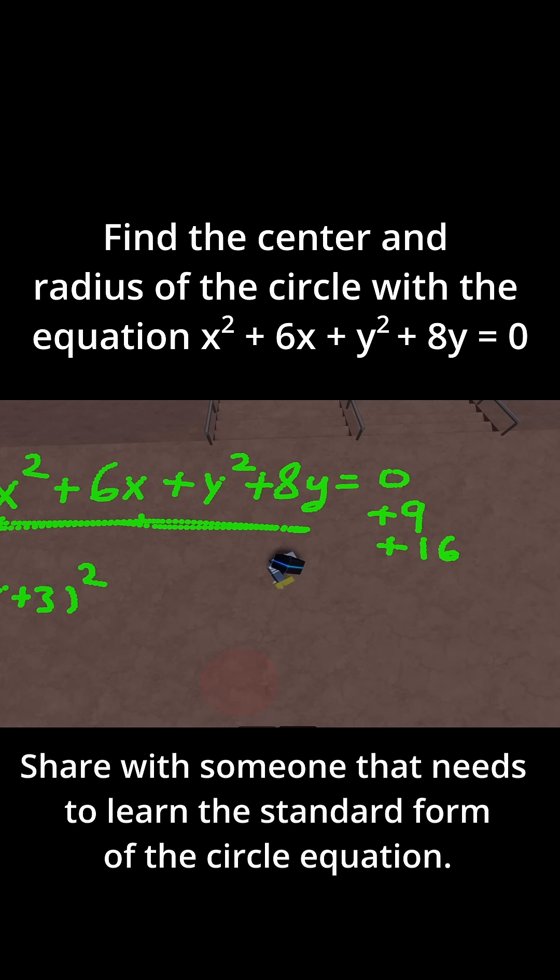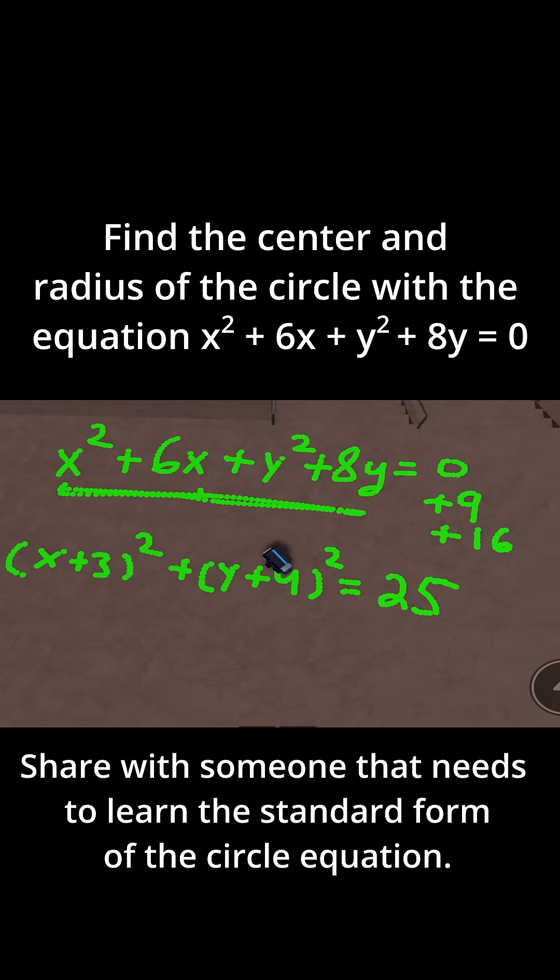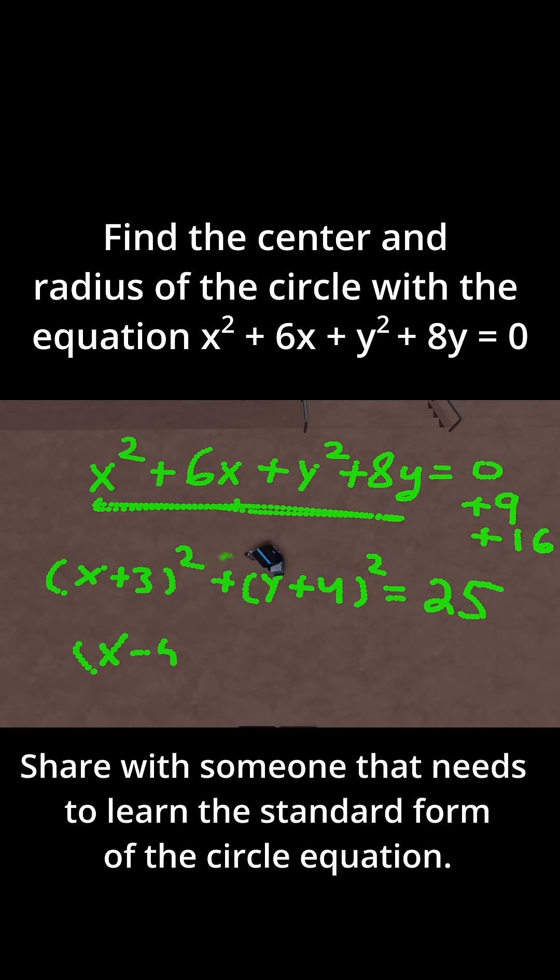So now let me write that down. So we have x plus 3 squared plus y plus 4 squared is equal to, we have 0 plus 9 plus 16. 9 plus 16 plus 0 is just 25. And now we're good to go because this is in x minus h squared plus y minus k squared equals r squared form. We're done. So now all we need to do is just get the center and the radius.